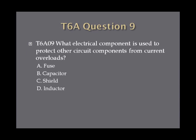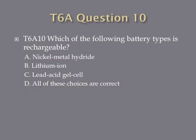Question 9: What electrical component is used to protect other circuit components from current overloads? A, fuse. B, capacitor. C, shield. Or D, inductor. Question 10: Which of the following battery types is rechargeable? A, nickel metal hydride. B, lithium ion. C, lead acid gel cell. Or D, all of these choices are correct.